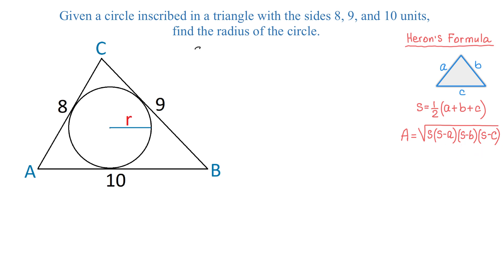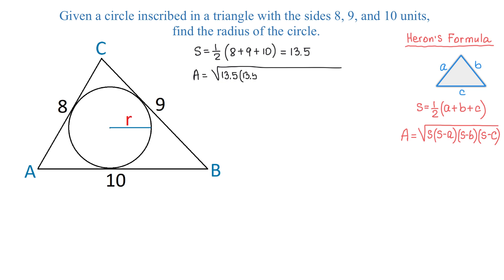In our problem, S equals one half times (8 plus 9 plus 10), which equals 13.5. In the second part, the area equals the square root of 13.5 times (13.5 minus 8) times (13.5 minus 9) times (13.5 minus 10). This area is approximately 34.197.